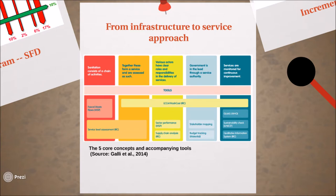This concept considers the chain of activities involving provision of sanitation, which are safe containment, collection, transportation and disposal or reuse. The activities along the chain together form a service which is assessed in terms of accessibility, use, reliability and environmental protection. The various actors and stakeholders have clearly defined roles and responsibilities in the delivery of the service. Government is usually the lead authority in defining roles and monitoring the services for improvements.